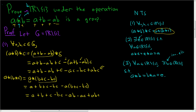Now let's use a different color and carefully check that these two expressions are equal. We have a — check. We have b — check. Negative ab — check. Plus c — check. Minus ac — check. Minus bc — check. And finally abc — check. So we've shown that star is an associative binary operation.